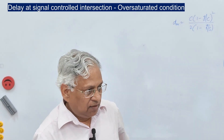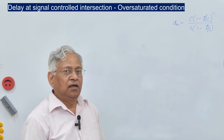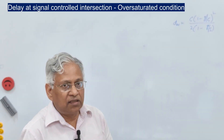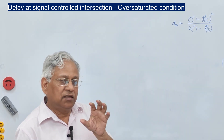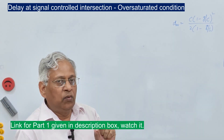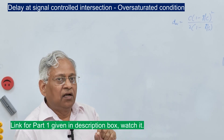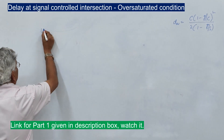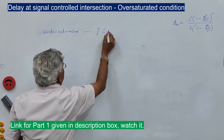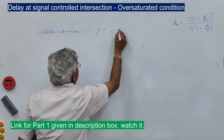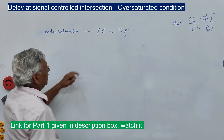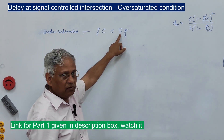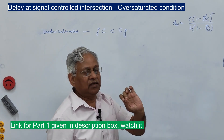In the last session, we discussed how to determine delay at a signal controlled intersection, covering two cases: under-saturation and saturation. For an under-saturated cycle, the condition is Q×C < S×G, where Q is the rate of arrival, C is the cycle length, S is the saturation flow (rate of departure), and g is the effective green time.